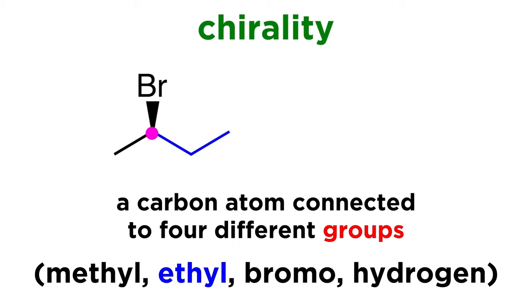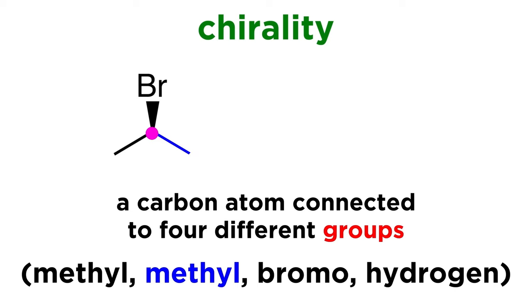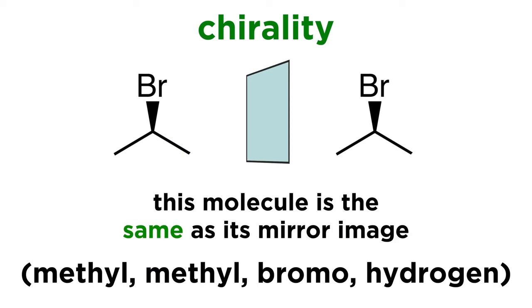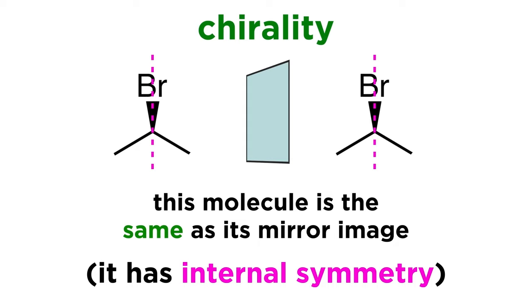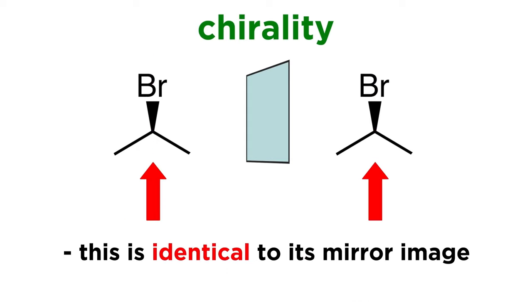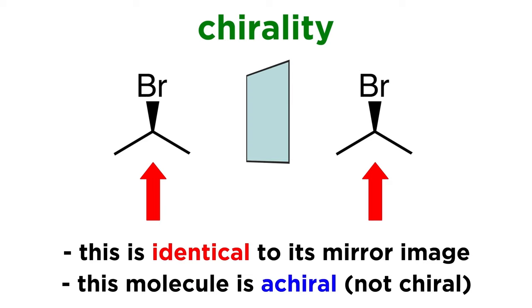If we changed this ethyl to a methyl, when we get the mirror image we would find that it is absolutely identical. This is due to the internal symmetry of the molecule. Because the mirror image is identical, this molecule is not chiral, which we can also call achiral.